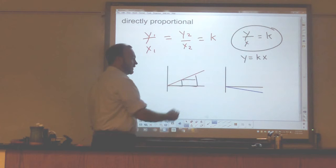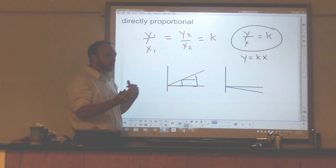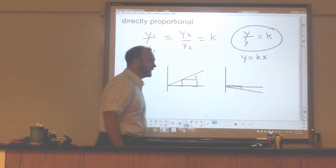However, it doesn't have to be that when one goes up, the other goes up. It could be that when one goes up, the x value goes up, the y value goes down. The key thing is that you're always getting the same ratio of y to x. y over x is equal to a constant.